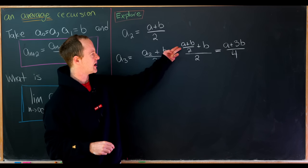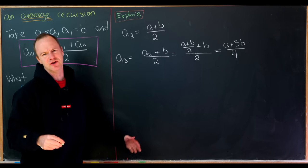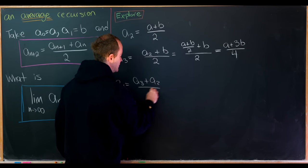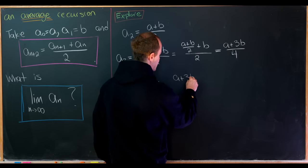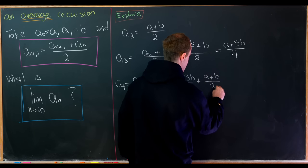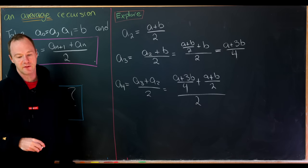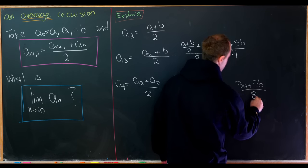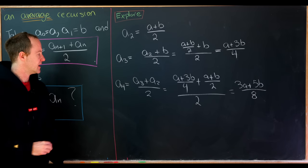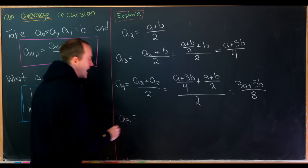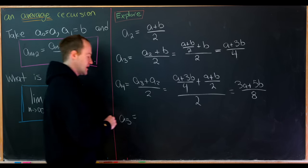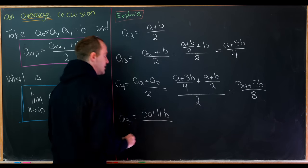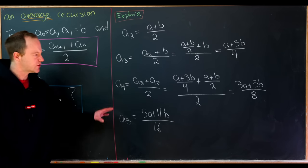Simplifying a3 gives us (a + 3b) / 4. Then a4 = (a3 + a2) / 2 = ((a+3b)/4 + (a+b)/2) / 2, which reduces to (3a + 5b) / 8. Let's write one more: a5 turns out to be (5a + 11b) / 16.